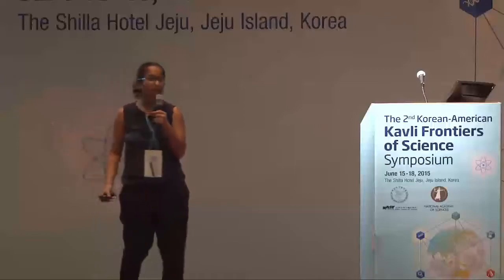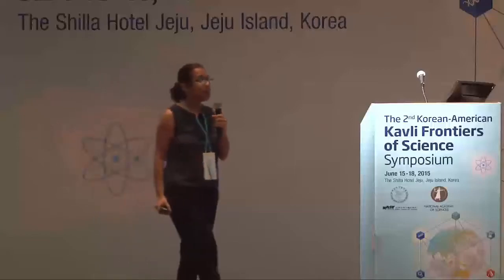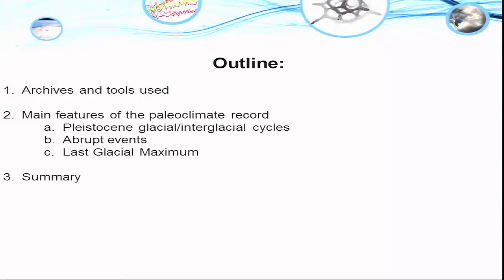I'll talk about the discovery of abrupt climate events — really events that occur on timescales that matter to us. So abrupt coolings and abrupt warmings that can take place on the timescale of, say, five years to 20 years. And then I'll talk about some of the work that my group has been doing looking at the climate of the last ice age about 20,000 years ago.